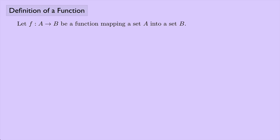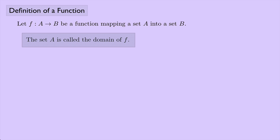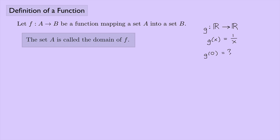Let's formally define these terms. Let F be a function from A to B. The set A we call the domain of F. There's one tricky thing related to the domain: if we define a function G from all real numbers to all real numbers given by G(x) = 1/x, there's a problem. Our definition says a function must map each element in A to something in B, but G(0) = 1/0, which is undefined. So there's a problem there.